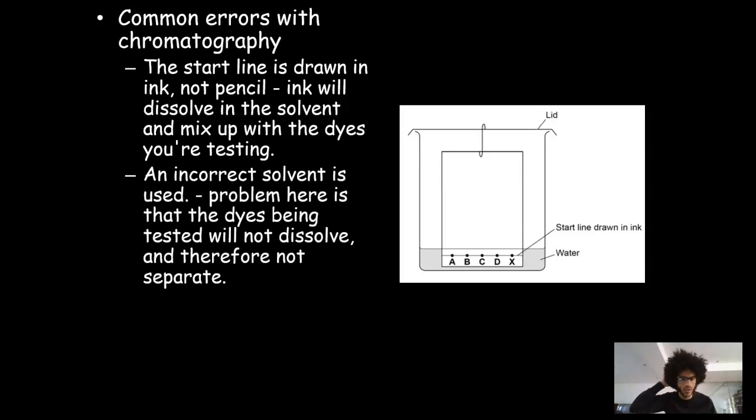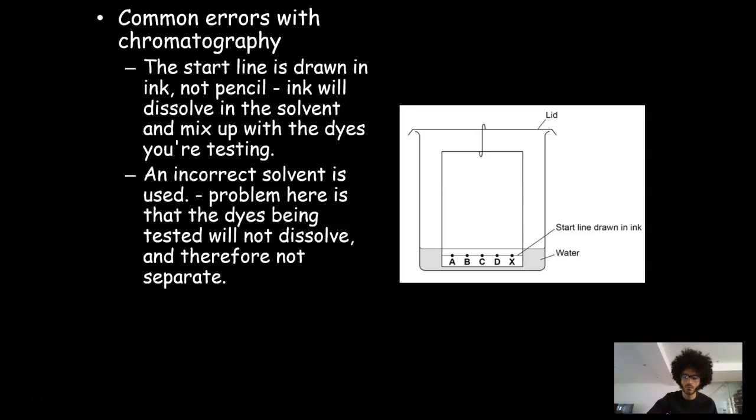Second error is that they used an incorrect solvent. Sometimes this happens. You can see in this particular method, water is used. Sometimes they'll say in the text at the beginning, oh, A, B, C, D, and X are insoluble in water, but they are soluble in ethanol. So you do have to read the information as well as the diagram, just to make sure that you've got that detail absolutely spot on.